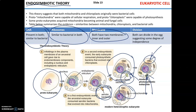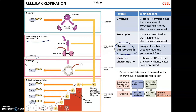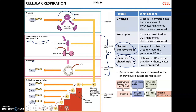Cellular respiration has four steps: glycolysis, the transition step, the Krebs cycle, and the electron transport chain with oxidative phosphorylation. During glycolysis, a molecule of glucose is converted into two molecules of pyruvate, producing some high-energy electrons but not much ATP. During the transition step and Krebs cycle, pyruvate is oxidized to carbon dioxide and a large number of high-energy electrons are produced.